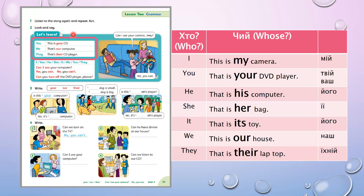They — вони — that is their laptop — це їхній ноутбук. They changes to 'their'. You have a similar table in your books. Today we focus on the pronouns we know a little less: you/your, we/our, they/their. This is your CD — ваш диск. That's our computer — наш комп'ютер. That's their CD player.